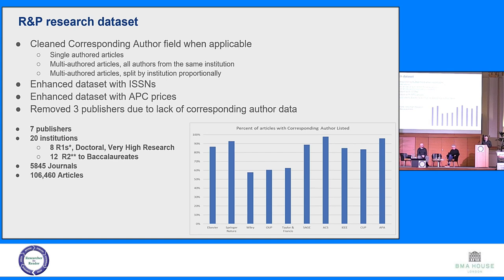We then realized we needed to remove three publishers — Wiley, OUP, and Taylor and Francis — because for whatever reason, Dimensions was showing far less corresponding author data for those three. We've since talked to each of those publishers, and this is not a criticism — it's just worth noting that because corresponding author didn't matter that much historically, it simply isn't getting fed through the data systems.